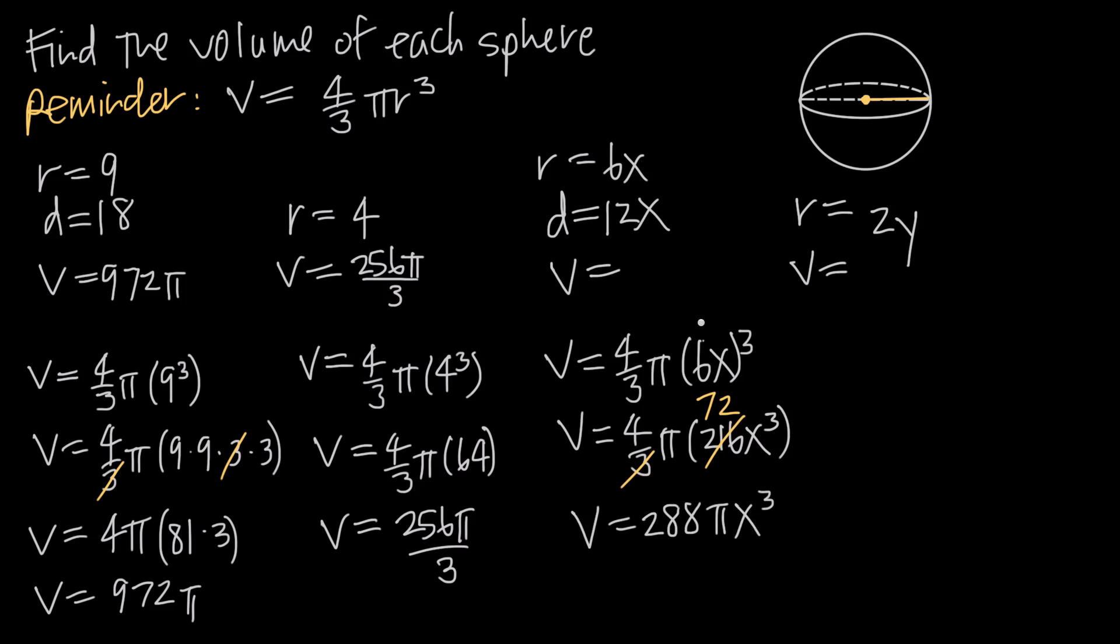And we'll just leave our answer for volume in terms of x, so 288 pi x cubed. Then of course if you were told to find volume with a specific value for x, you could plug that value in for x and give a real number answer for volume. But in this case, we'll just leave it in terms of x.